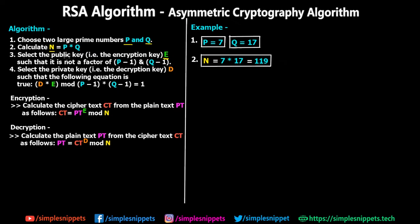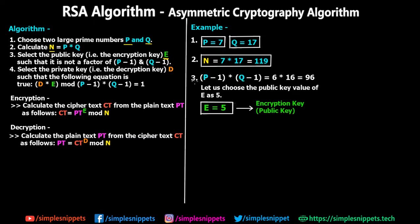In step three, we select the public encryption key E such that it is not a factor of (P−1) × (Q−1). In our case, P−1 = 6 and Q−1 = 16, so (P−1) × (Q−1) = 6 × 16 = 96. We must choose E such that it is not a factor of 96. We choose E = 5, because 5 is not a factor of 96. So E = 5 is our public encryption key.